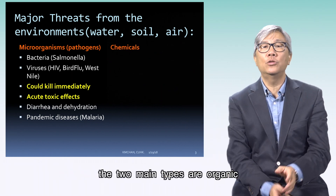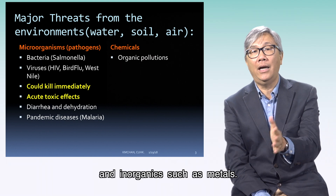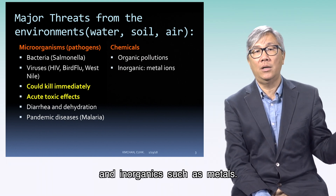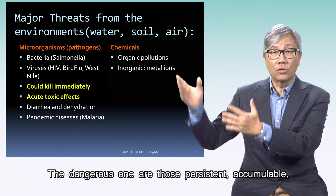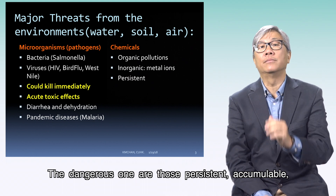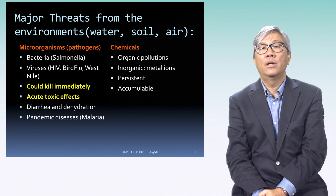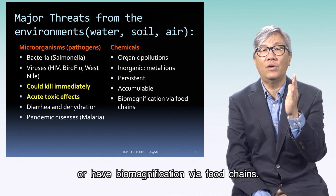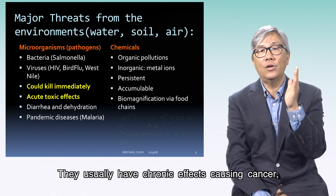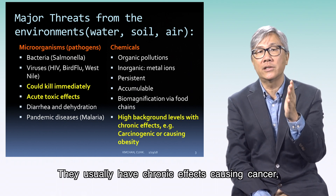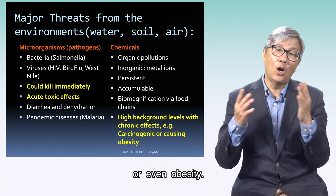For chemicals, the two main types are organic and inorganic such as metals. The dangerous ones are those that are persistent, accumulable, or have biomagnification within food chains. They usually have chronic effects causing cancer or even obesity.